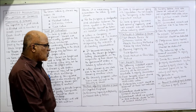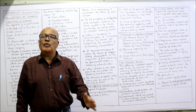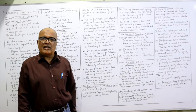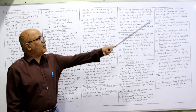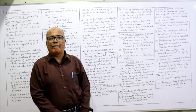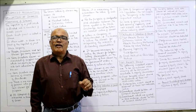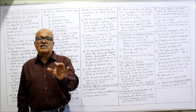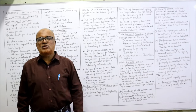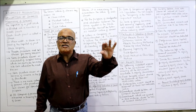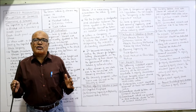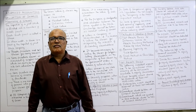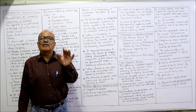Next, investments quoted in the stock exchange should be taken at current market price. Then, sundry debtors, bills receivable, and trade receivables should be valued at the net expected realizable value. For example, if in the balance sheet debtors are given as 5 lakh rupees but according to company management 50,000 are irrecoverable bad debts, then we deduct the bad debts — so we take 4 lakh 50 thousand as the debtors figure.